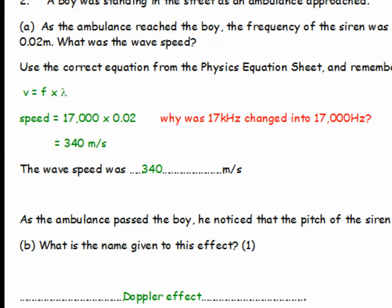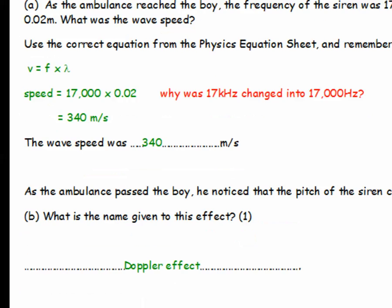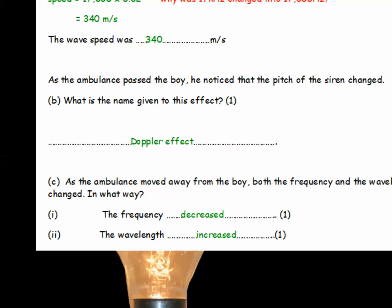So, we're after the wave speed. Start out with the correct equation. This is the wave equation. V equals F times lambda. Speed equals frequency times wavelength. Now for frequency, I've changed 17 kHz into 17,000 Hz because the wave equation uses frequency in Hz, not kHz. So you've always got to have your frequency in Hz. And keep metres as metres. So 17,000 times 0.02 is 340 metres per second. The name of the effect is the Doppler effect. And as the ambulance moved away from the boy, the frequency decreased and the wavelength increased.